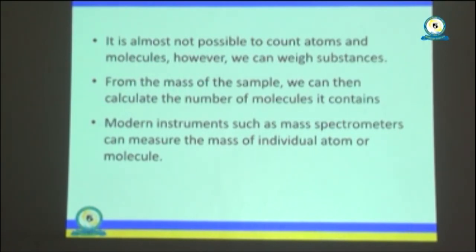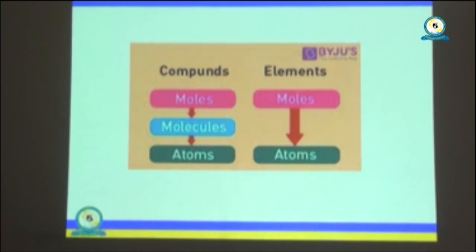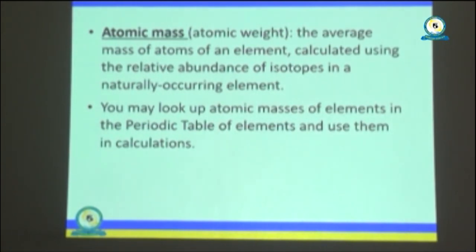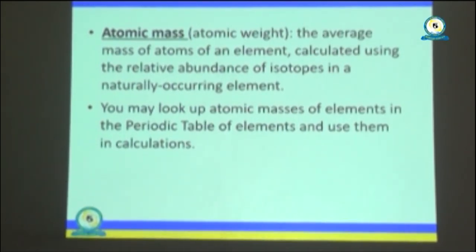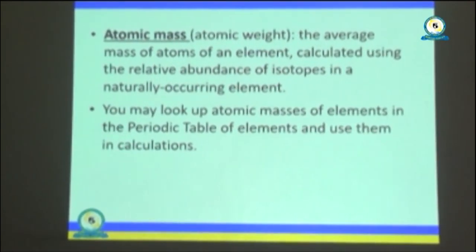We know that it is almost impossible to count atoms and molecules; however, we can weigh a substance. From the mass of a given sample, we can calculate the number of molecules it contains. Nowadays, there are modern instruments such as mass spectrometers that can measure the mass of individual atoms or molecules. So in compounds, you have moles, molecules, and atoms. The atomic mass, also known as atomic weight, is the average mass of atoms of an element calculated using the relative abundance of isotopes in a naturally occurring element. Most of the time, you can look up atomic masses provided in the periodic table of elements and use them in calculations.